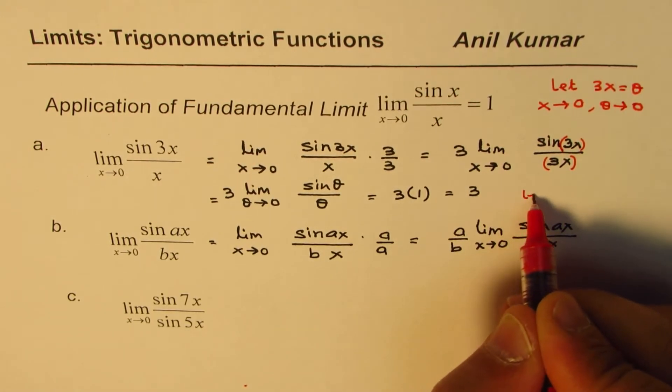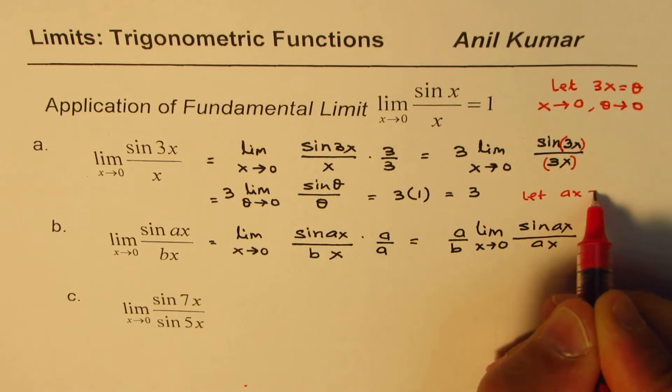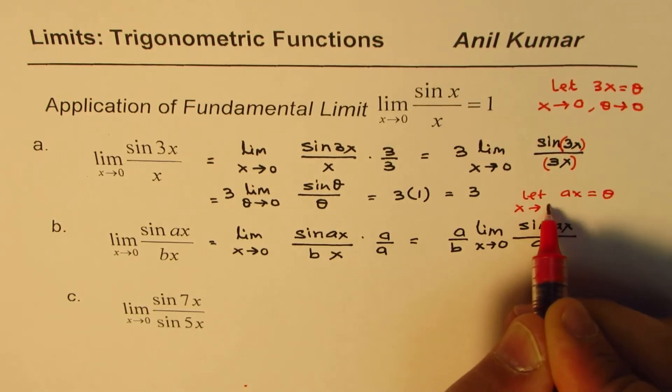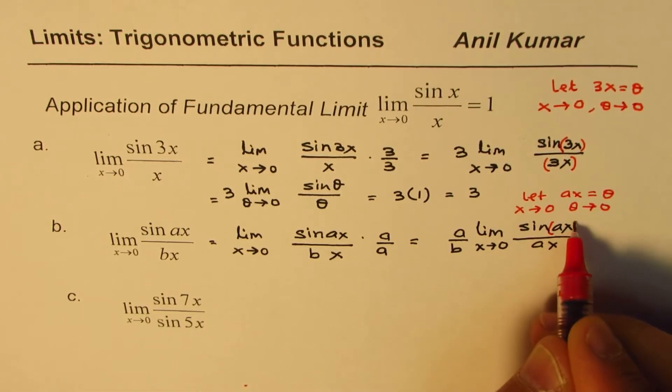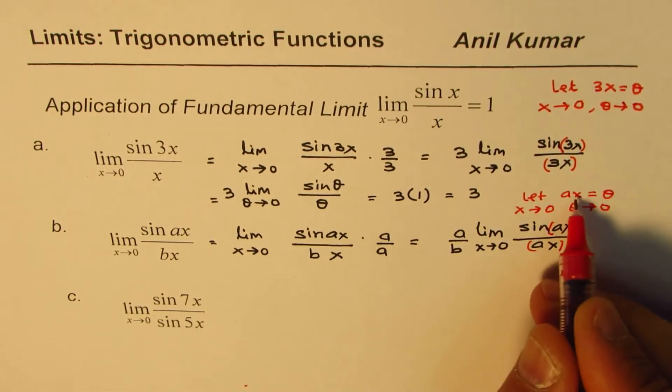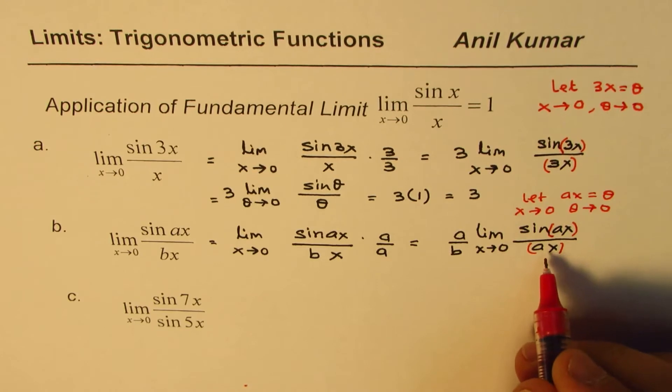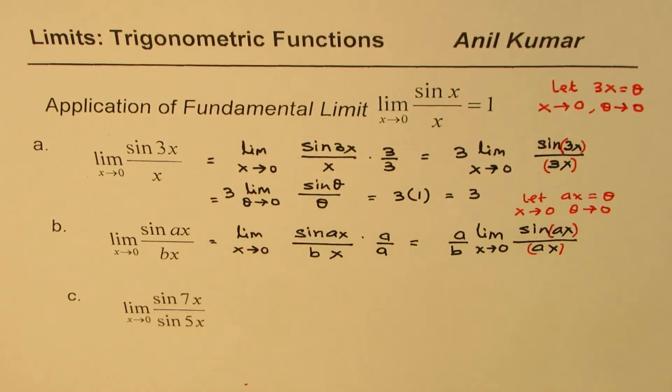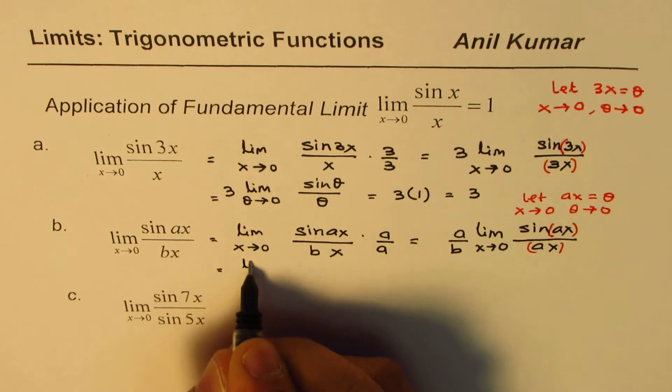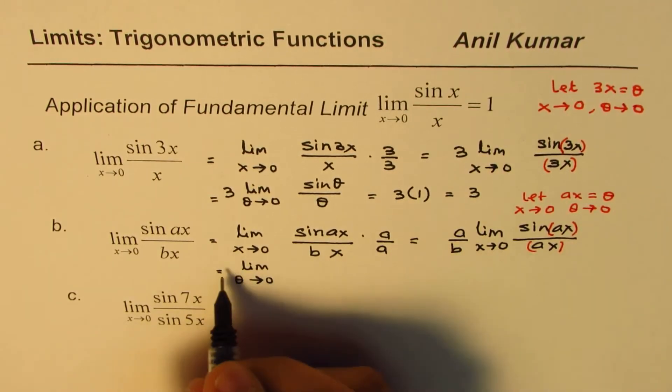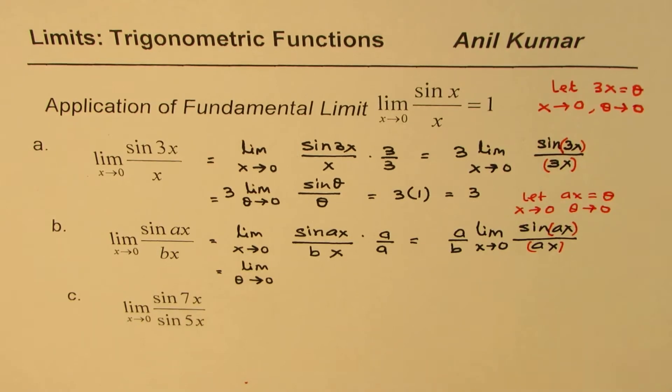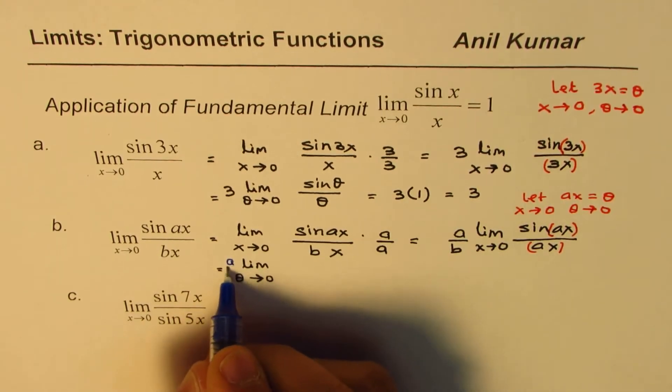Now, you can again write down substitution. That is, let ax equals to theta. And as x approaches 0, theta approaches 0. So you can replace this by theta. So once you do that, just as we did here, let me rewrite now. So what you get here is limit theta approaches 0. a over b. Let me rewrite. Let me write it in a different thing. a over b.